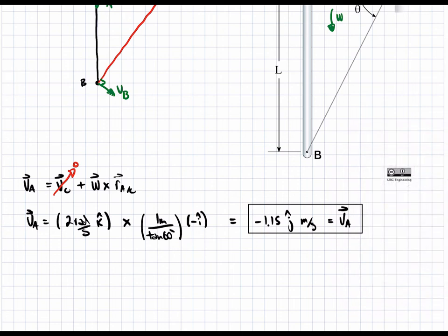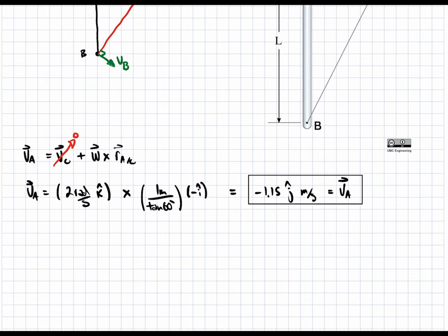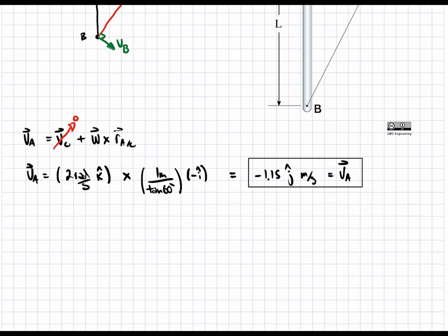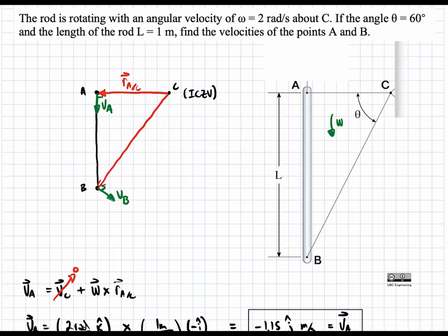Moving on to VB, we use the same technique, same equation. But this time, we're going to have a bit of a more complex cross product, because the radius vector is actually in two dimensions. So VB is equal to VC plus omega crossed to R of B with respect to C. So again, R of B with respect to C in our kinetic diagram is this vector over here.